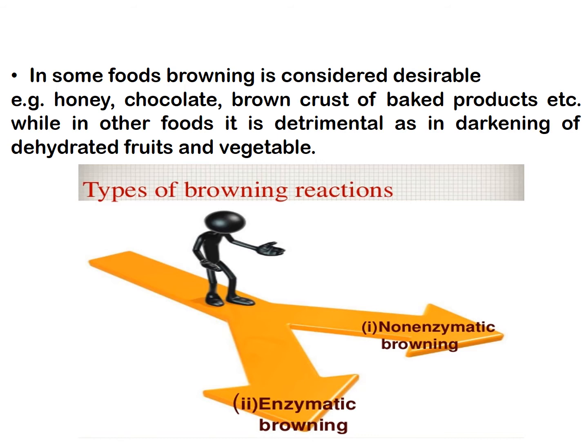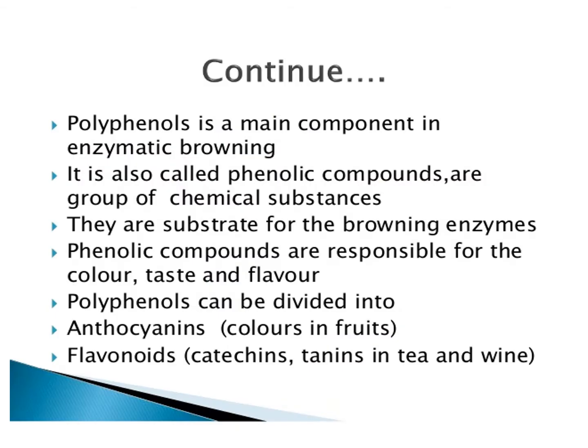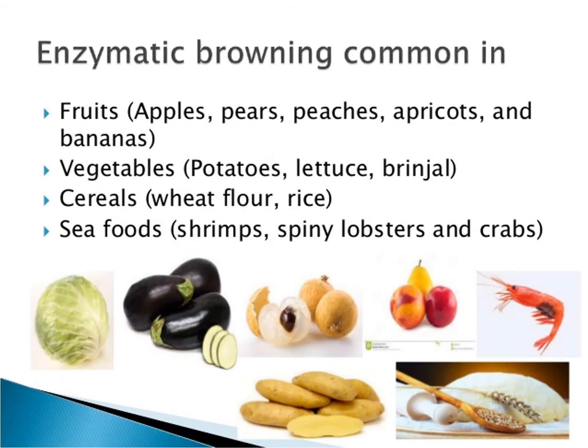There are two types of browning reactions: enzymatic browning and non-enzymatic browning. Polyphenol is the main component in enzymatic browning, also called phenolic compounds. These phenolic compounds are responsible for the color, taste, and flavor. Polyphenols can be divided into anthocyanins, which provide colors in fruits, and flavonoids such as catechin and tannin found in tea and wine.